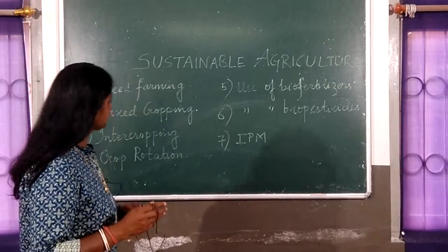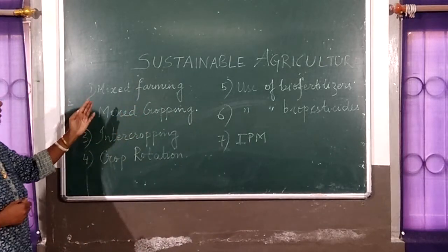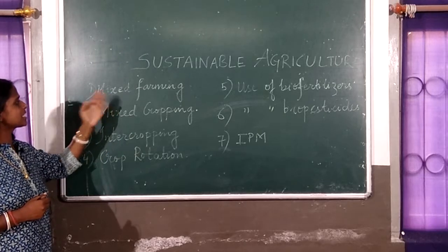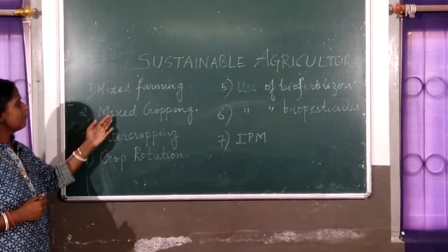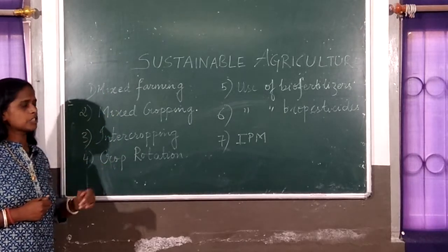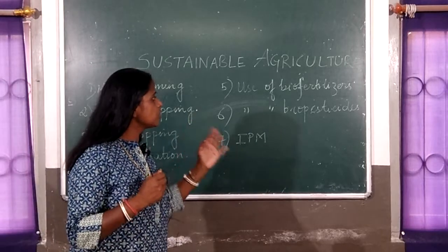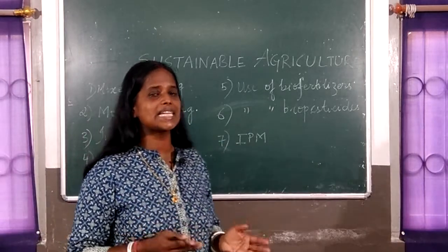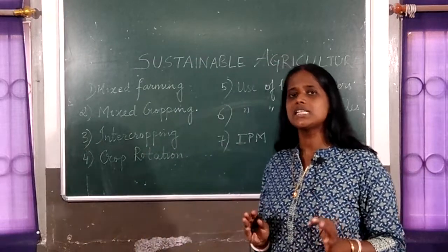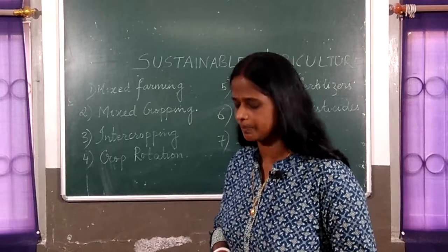So what are the elements that we are applying in sustainable agriculture so that we can continue with the productivity we had during green revolution? I have written the points for you. The elements of sustainable agriculture are: mixed farming, mixed cropping, intercropping, crop rotation, use of biofertilizers, use of biopesticides, and IPM which stands for Integrated Pest Management System.